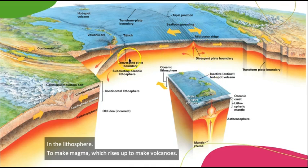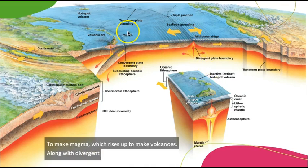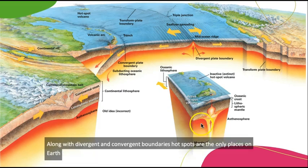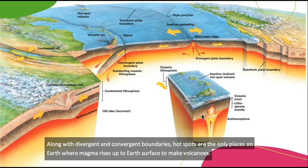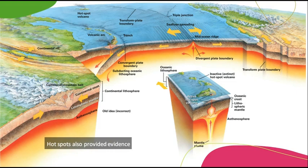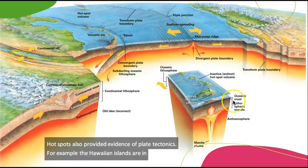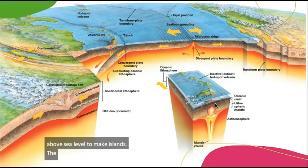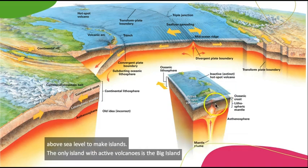Along with divergent and convergent boundaries, hot spots are the only places on Earth where magma rises up to Earth's surface to make volcanoes. Hot spots also provide evidence of plate tectonics. For example, the Hawaiian islands are an archipelago or a line of volcanoes that grew to above sea level to make islands. The only island with active volcanoes is the Big Island of Hawaii, which is sitting on the hot spot.